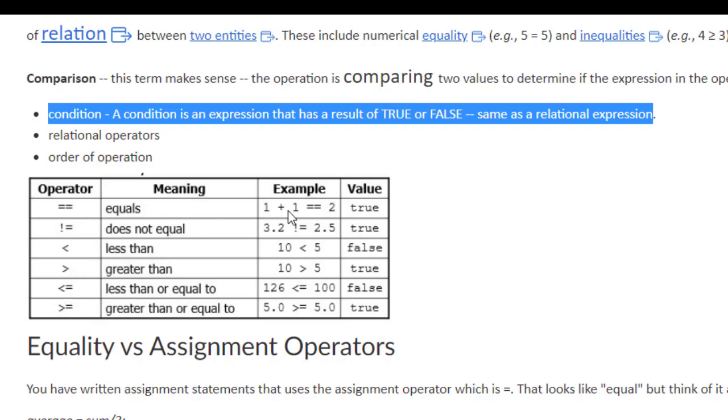Let's take a look at these examples. Here's the operator testing for equality. The left-hand side will execute, so one plus one is two. Is 3.2 not equal to 2.5? True. 10 less than 5? That's false. 10 greater than 5? True. 126 less than or equal to 100? False. 5.0 less than or equal to 5.0? That's true. When these relational operations are set as a condition in an if, depending on if it's true or false, it's going to do one thing or the other.